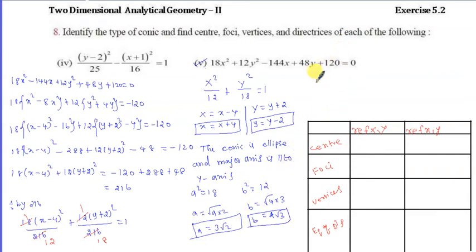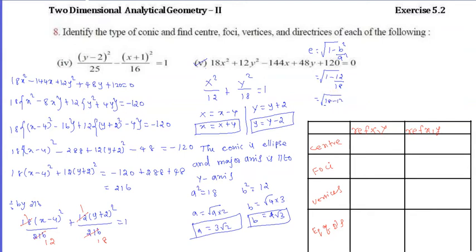Now we calculate eccentricity. The eccentricity formula is e equals square root of 1 minus b² by a², which equals square root of 1 minus 12 divided by 18, equals square root of (18 minus 12) divided by 18, equals square root of 6 by 18.